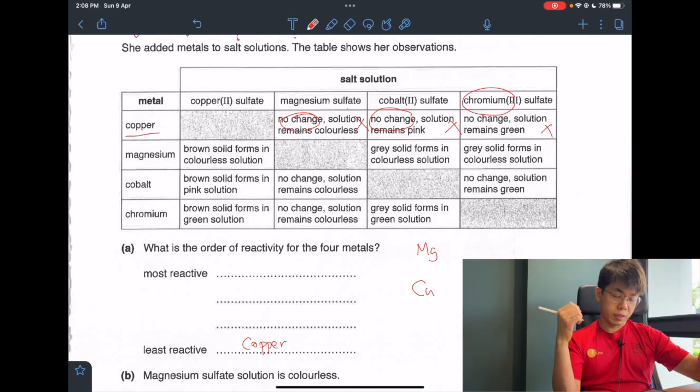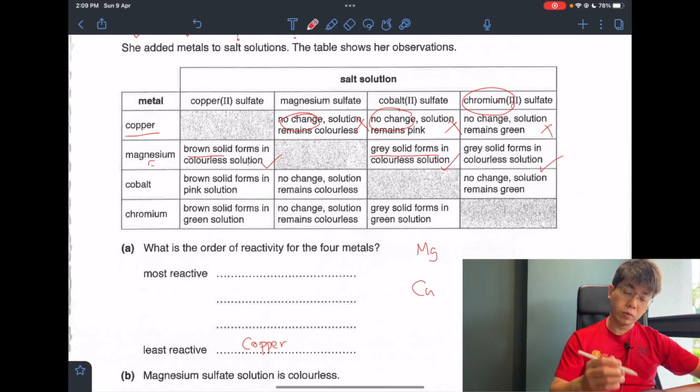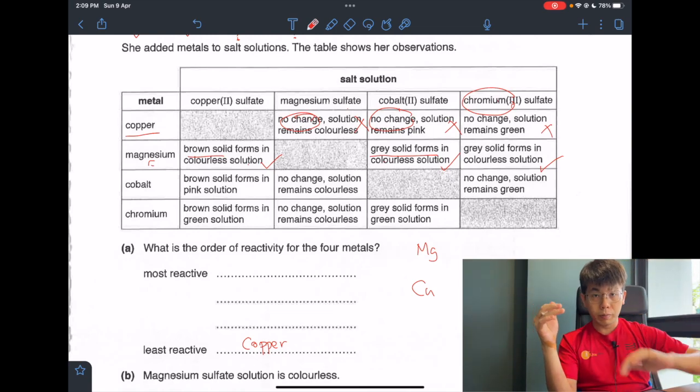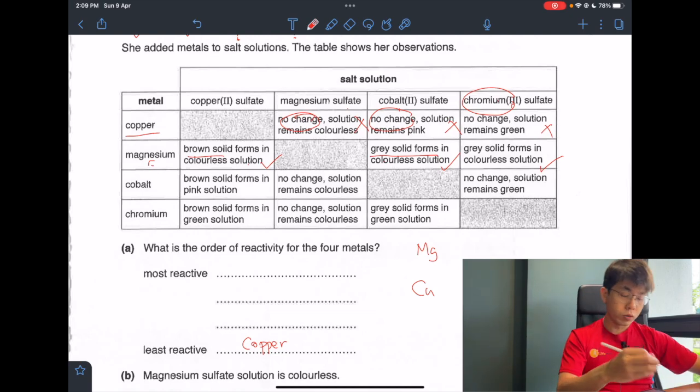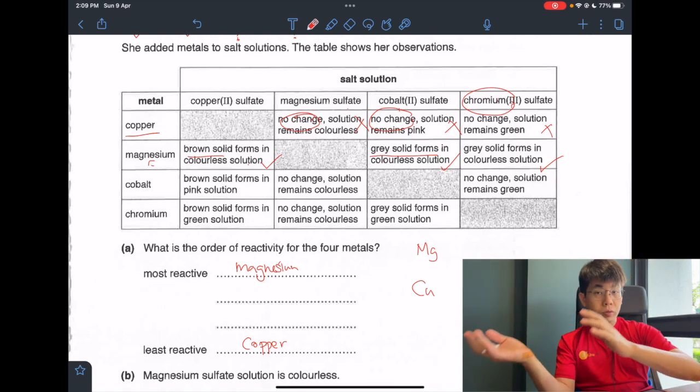Now let's see magnesium since it's something we already know. Magnesium can displace copper because a brown solid is formed. Magnesium can also displace cobalt because a grey solid forms, and chromium, magnesium can also displace chromium. So I know that magnesium can displace all the metals, meaning magnesium is the most reactive metal. Now we need to decide between cobalt and chromium.